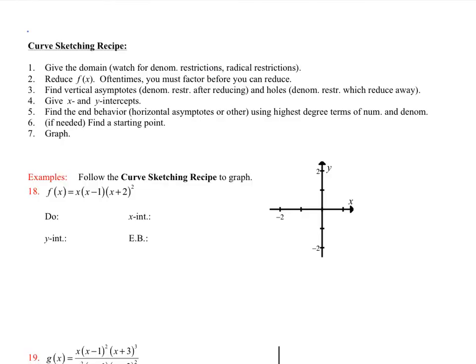Now we have our curve sketching recipe to put all this together. Step 1: find the domain. Step 2: reduce the function by factoring and canceling. Step 3: find vertical asymptotes. Step 4: find x and y intercepts, and holes. Step 5: find end behavior using the highest degree terms of the numerator and denominator. Step 6: find a starting point or a couple of points. Step 7: graph.